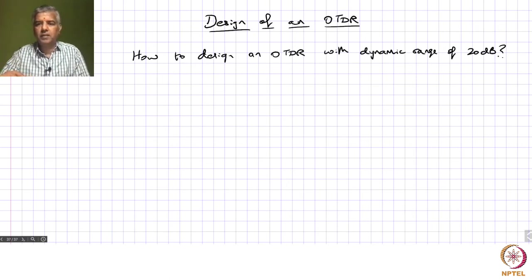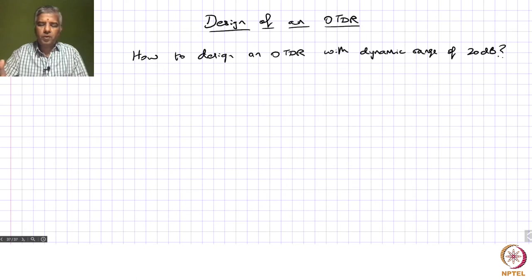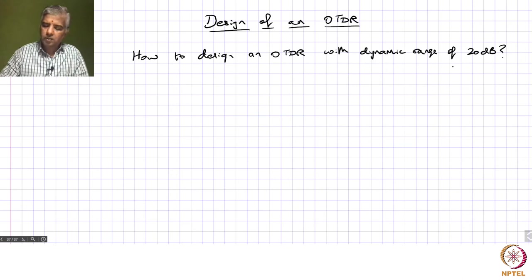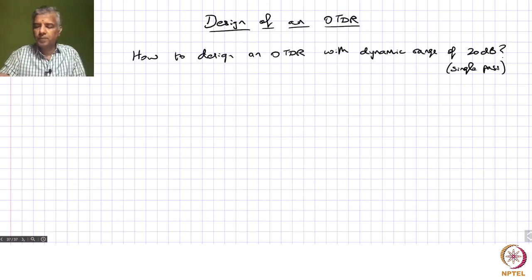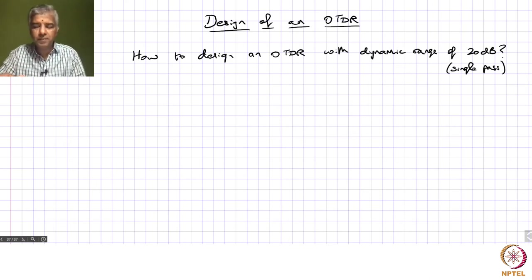Using our OTDR, the power values we are interested in are the back-scattered power values. We want to support a dynamic range of 20 dB, which is a factor of 100. We have to be careful about defining this because what we are typically interested in is the single-pass loss. The dynamic range we want is with respect to a single pass, and since the OTDR receives back-scattered signals, there is a round trip involved, so the overall loss we want to support may be 40 dB, corresponding to a maximum single-pass loss of 20 dB.